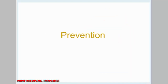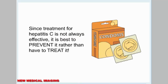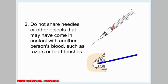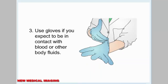Prevention. Since treatment for hepatitis C is not always effective, it is best to prevent it rather than have to treat it. Four of the best ways to prevent hepatitis C are: first, practice safe sex by using condoms and knowing your partner; second, do not share needles or other objects that may have come in contact with another person's blood, such as razors or toothbrushes.